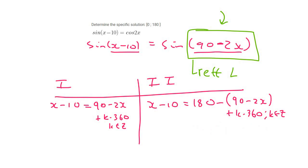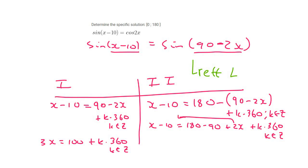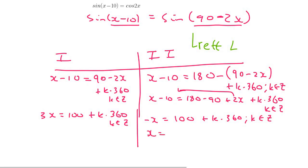If you understand that part, the rest is easy — now we solve for x. Bring −2x over: 3x = 100 + k·360, k an integer. For the quadrant two equation, simplify: x − 10 = 180 − 90 + 2x + k·360, then get x alone: x − 2x gives −x, so −x = 100 + k·360, k an integer.